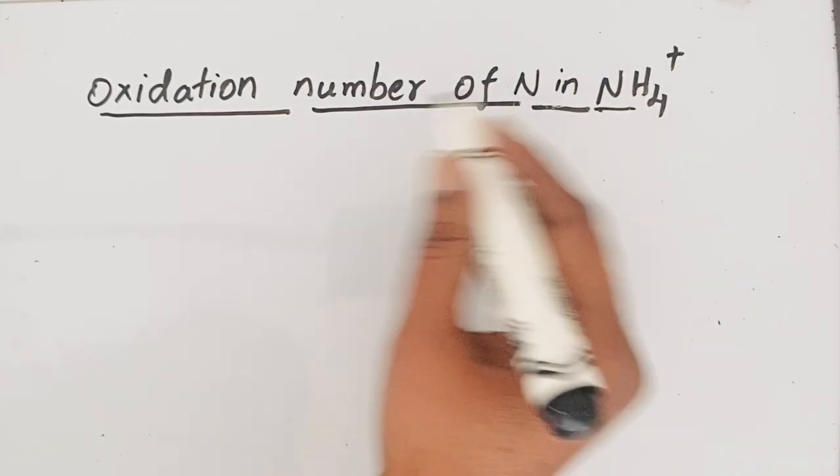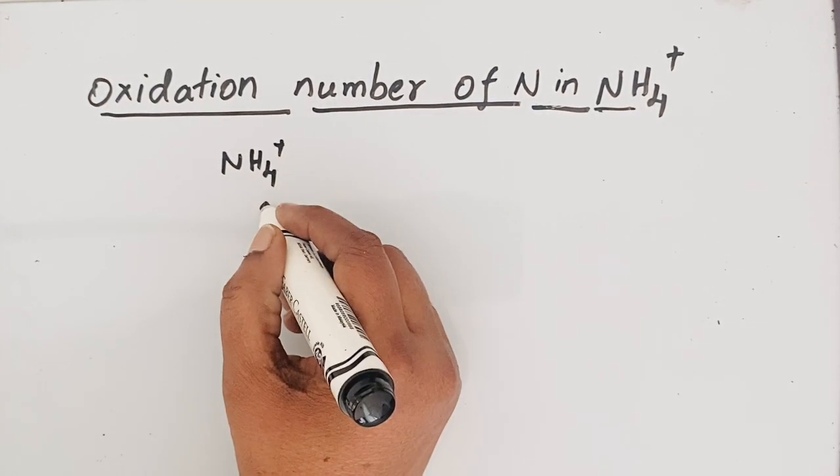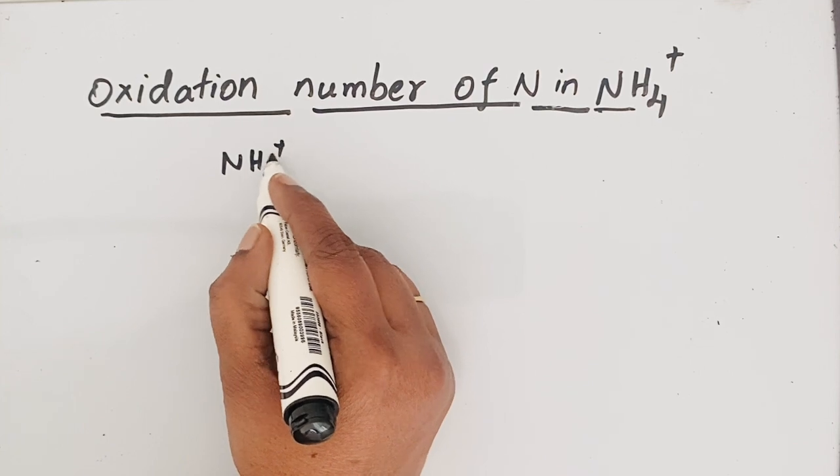If we look at this NH4+ ion, that means ammonium ion, the charge carried by the ion is +1.